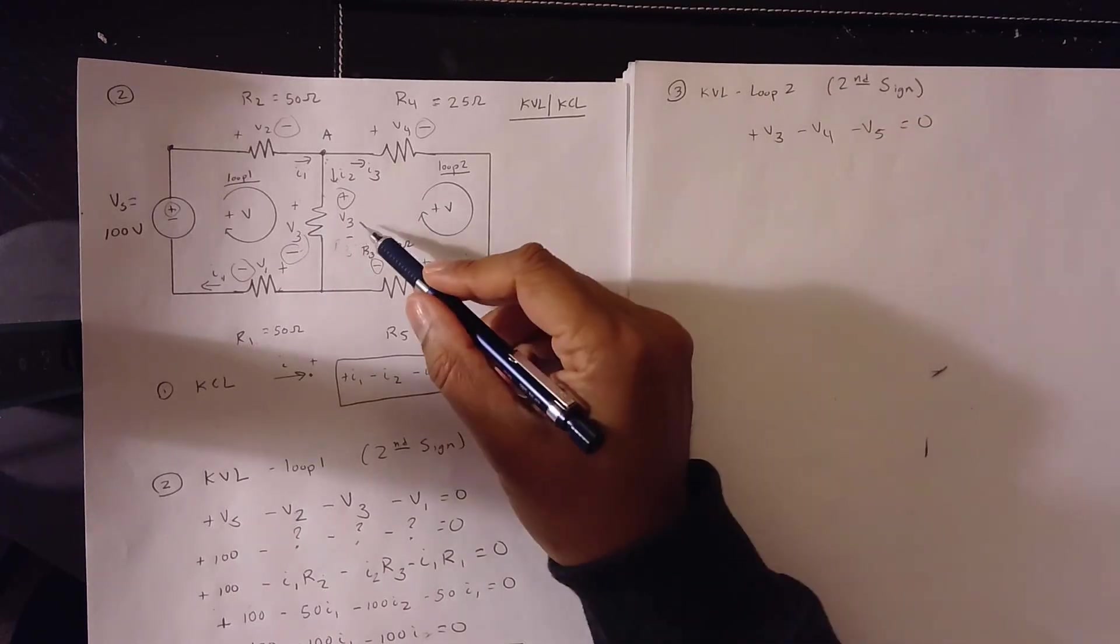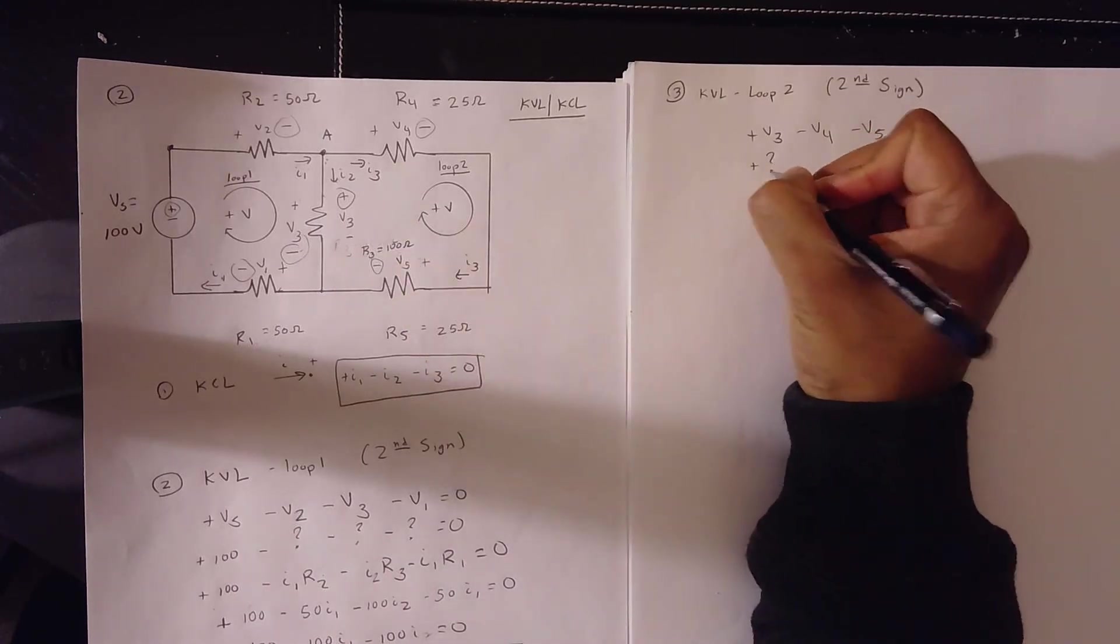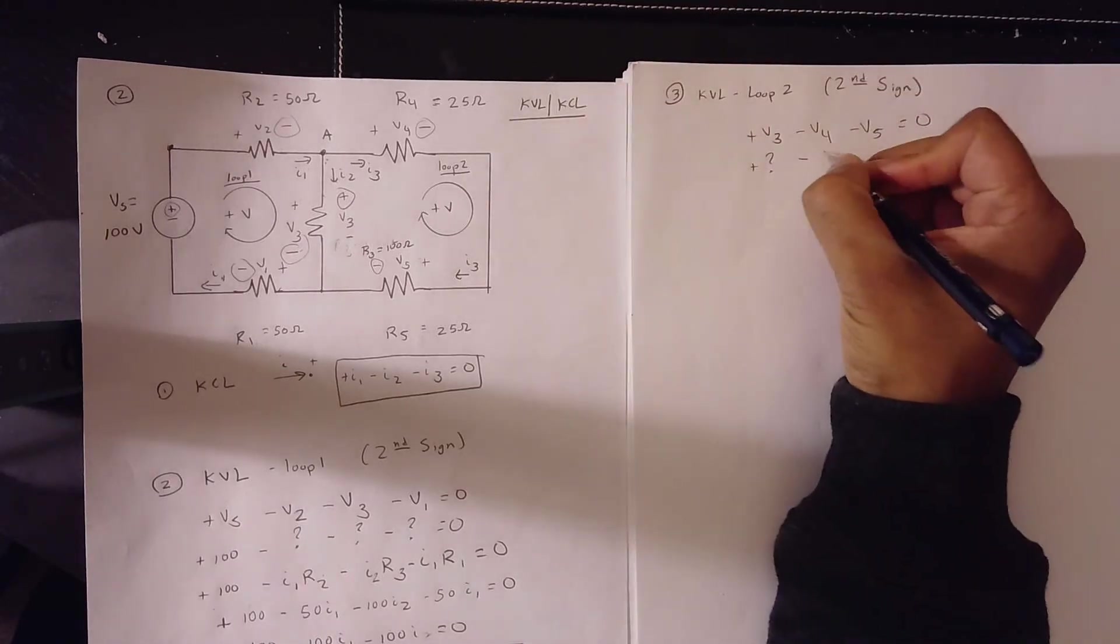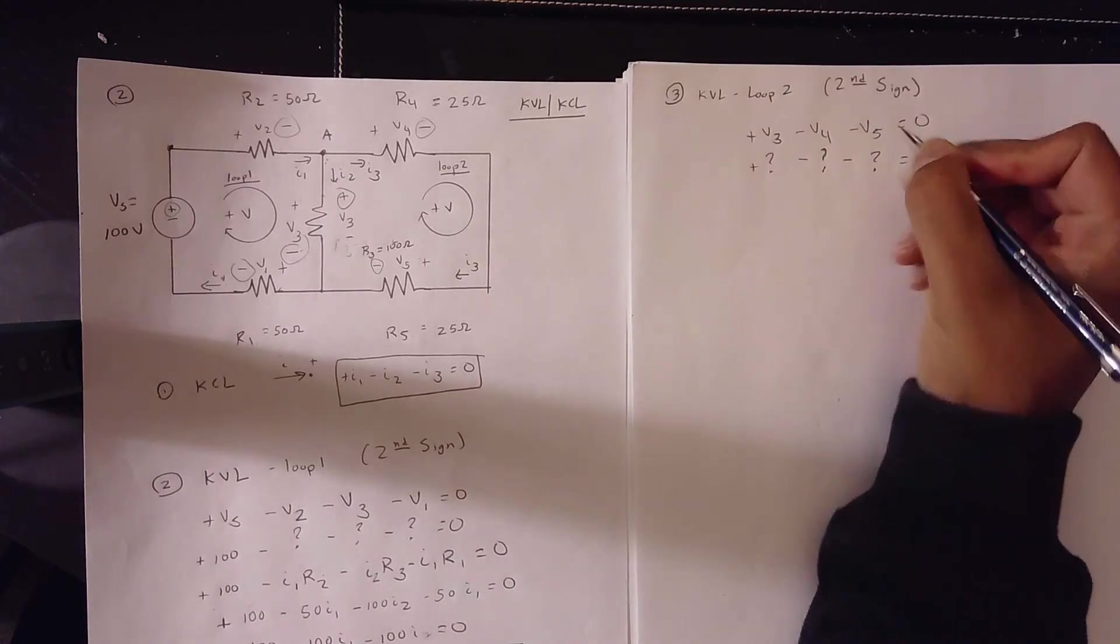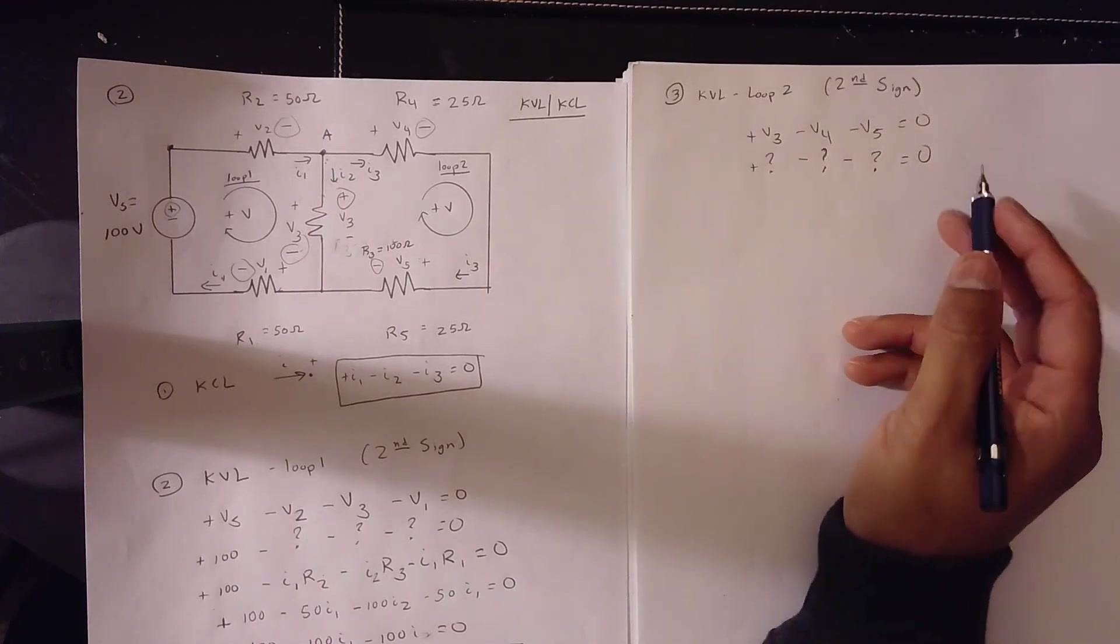What is V3? We don't know. We wrote it down. So we put plus question mark. V4. We don't know. Plus question mark. V5. We don't know. Minus question mark. Is equal to plus question mark minus question mark minus question mark is equal to 0.